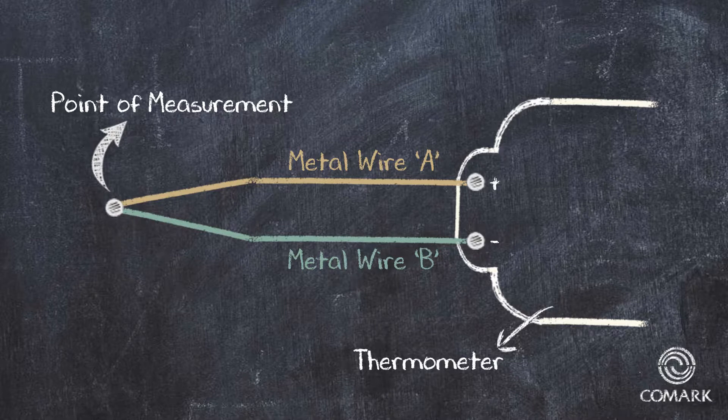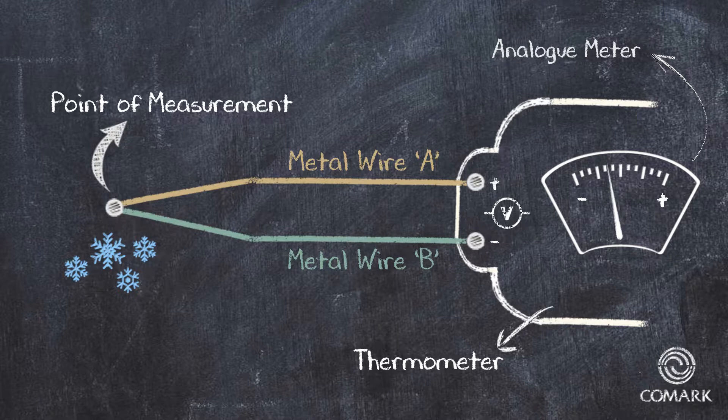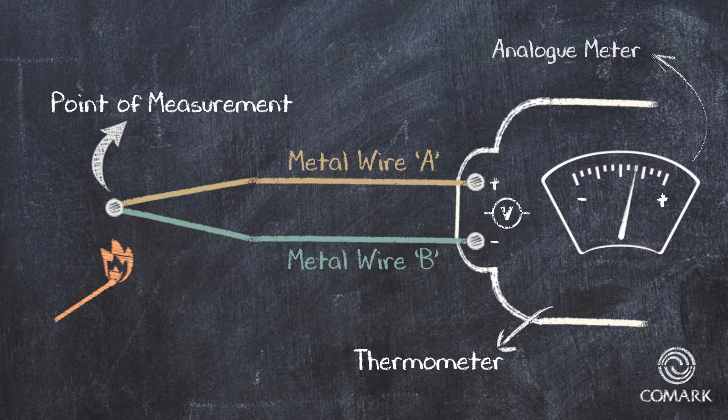As the two metals in the thermocouple are heated or cooled, they produce a very small but measurable voltage. If we imagine this voltage on an analogue meter, we would see a negative voltage and movement to the left if the point of measurement is exposed to something cold. And conversely, we would see a positive voltage and movement to the right if the point of measurement is exposed to something hot.